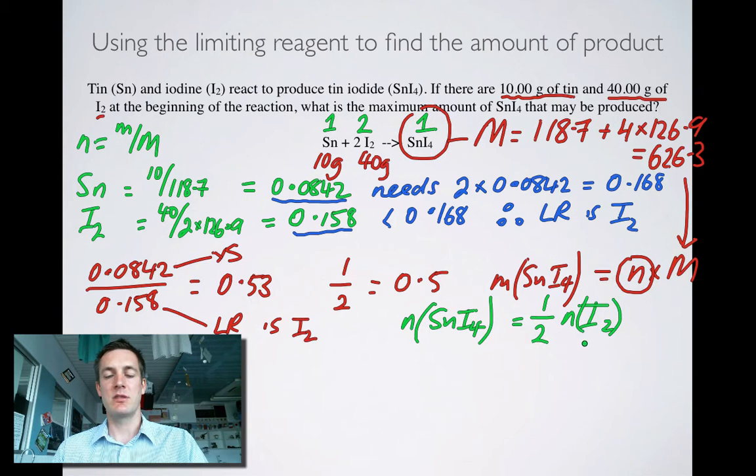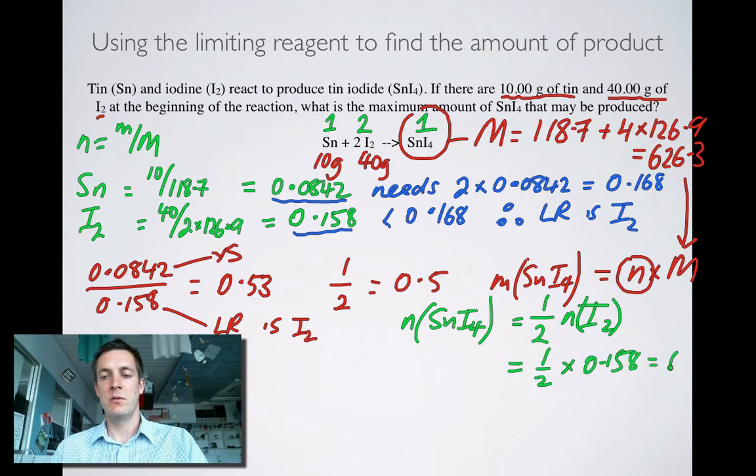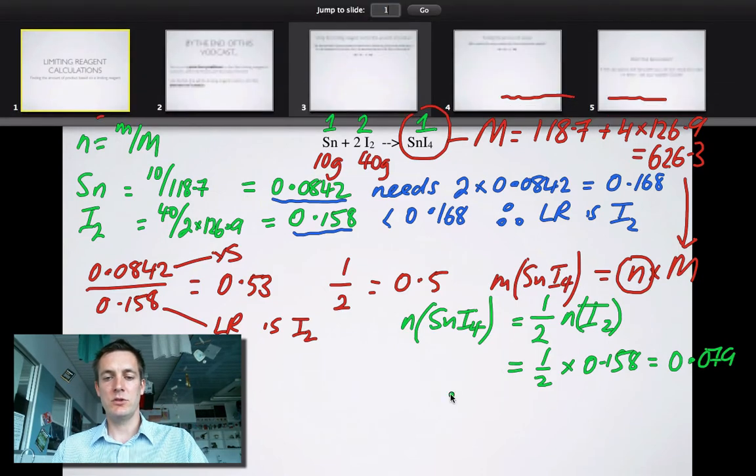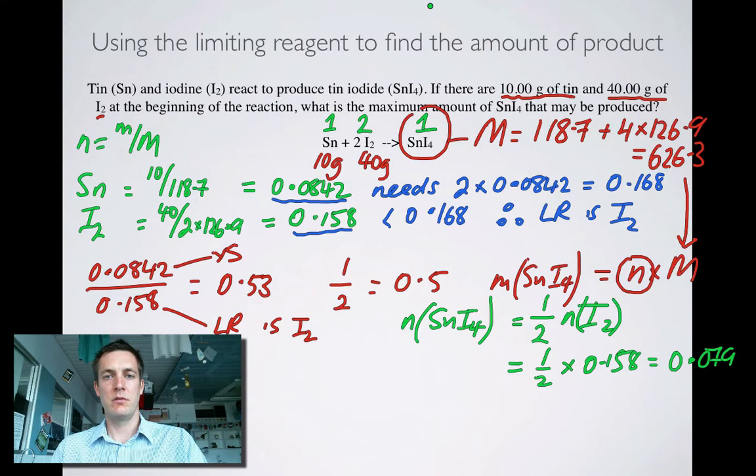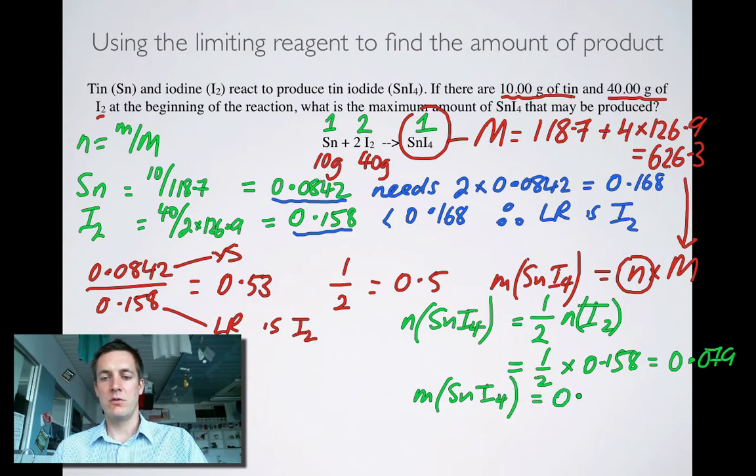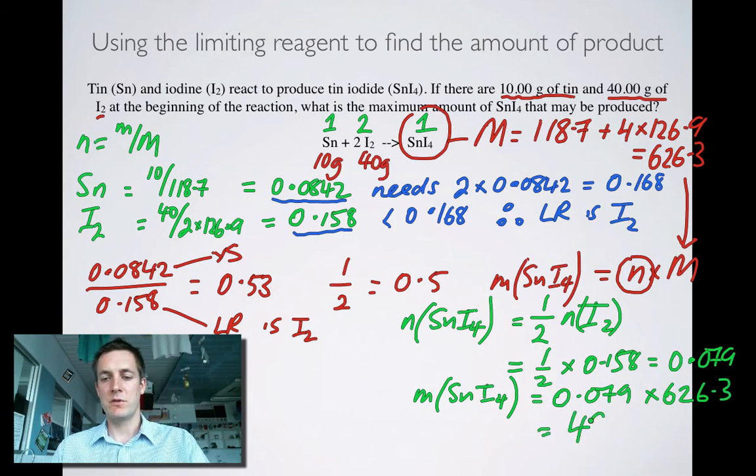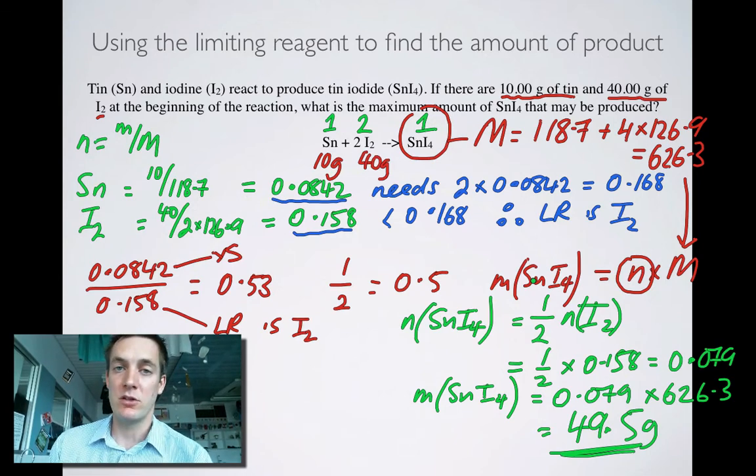Okay, that's what this statement says. Alright, and that equals 1 half times 0.158, which equals 0.079. Okay, so therefore the mass of tin iodide, that is equal to 0.079 multiplied by 626.3, and that equals 49.5 grams. Okay, so that's how we found the amount of product based on a limiting reagent.